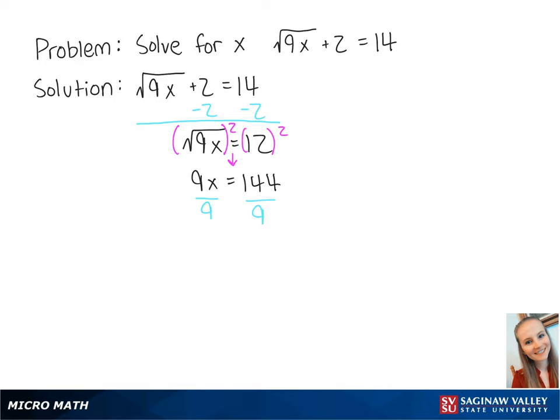To isolate the x, we'll divide 9 from both sides of the equation, giving us x equals 16.